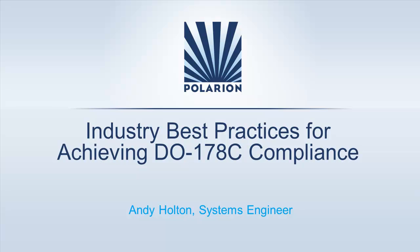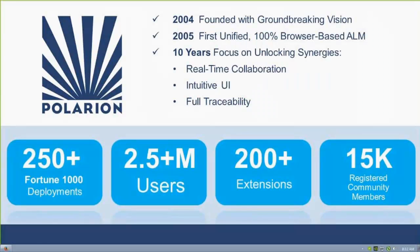Before we get started, just a little bit about Polarian for those of you who are unfamiliar with us. We were founded in 2004, and in 2005 we released the first unified 100% browser-based ALM solution. Since then, we have 10 years of focusing on bringing benefits to our customers, including real-time collaboration, easy-to-use intuitive UI, and really full traceability.